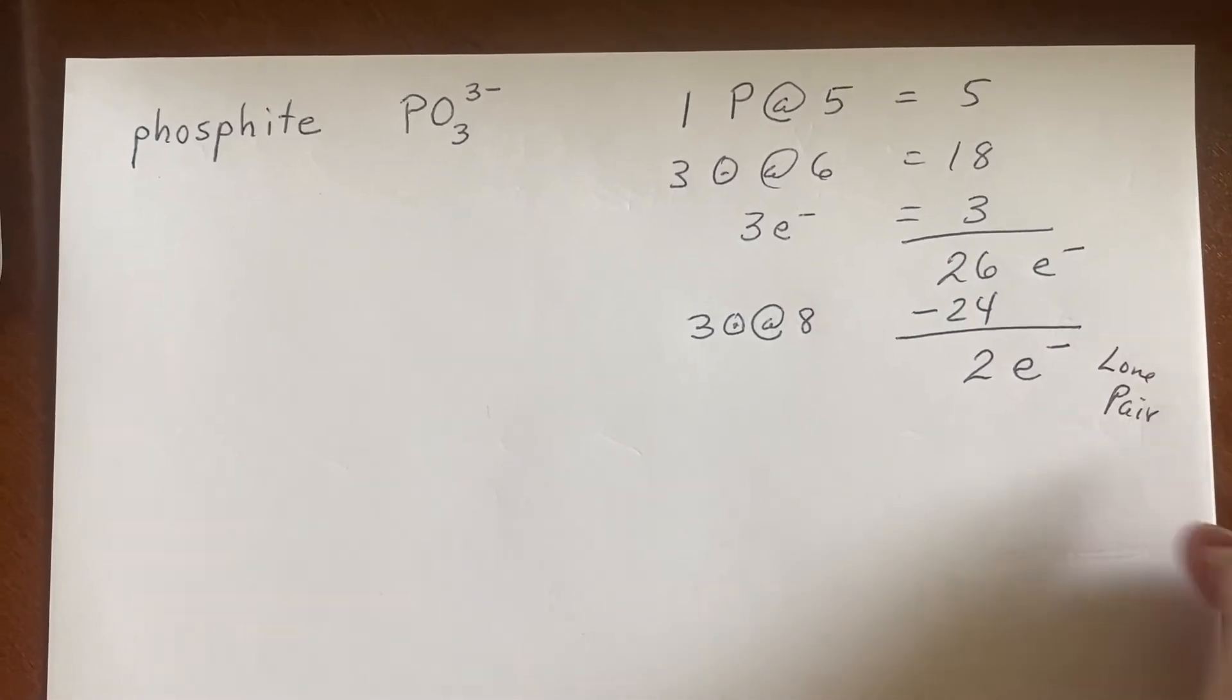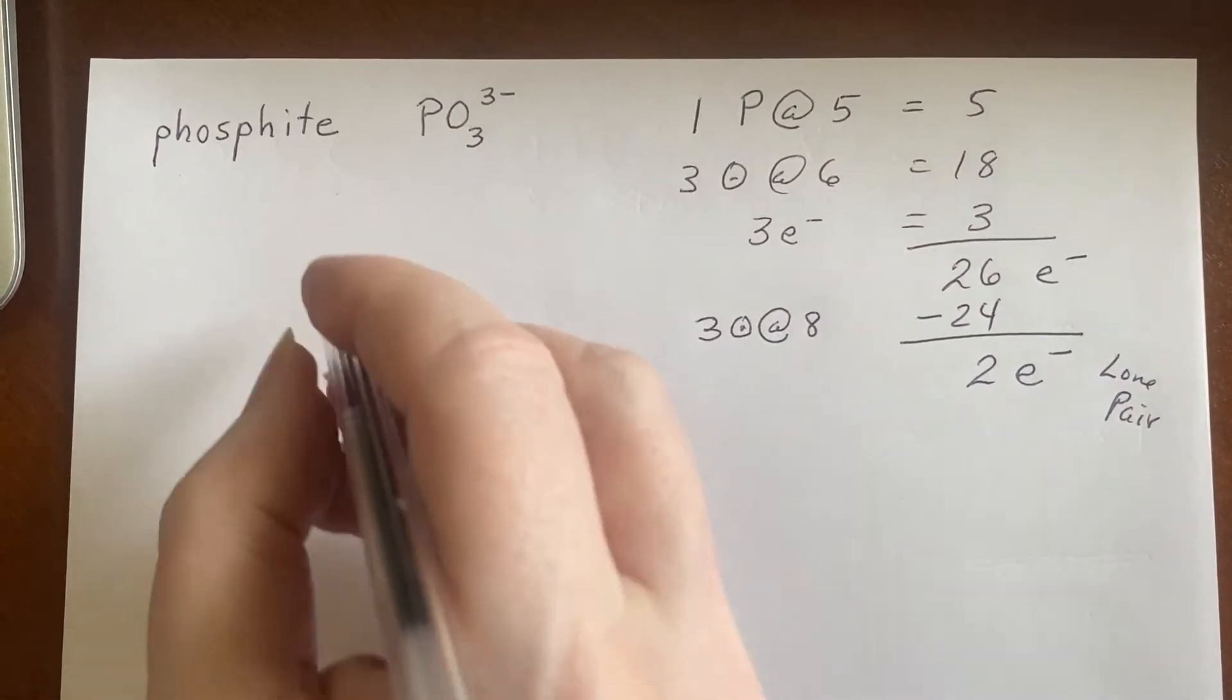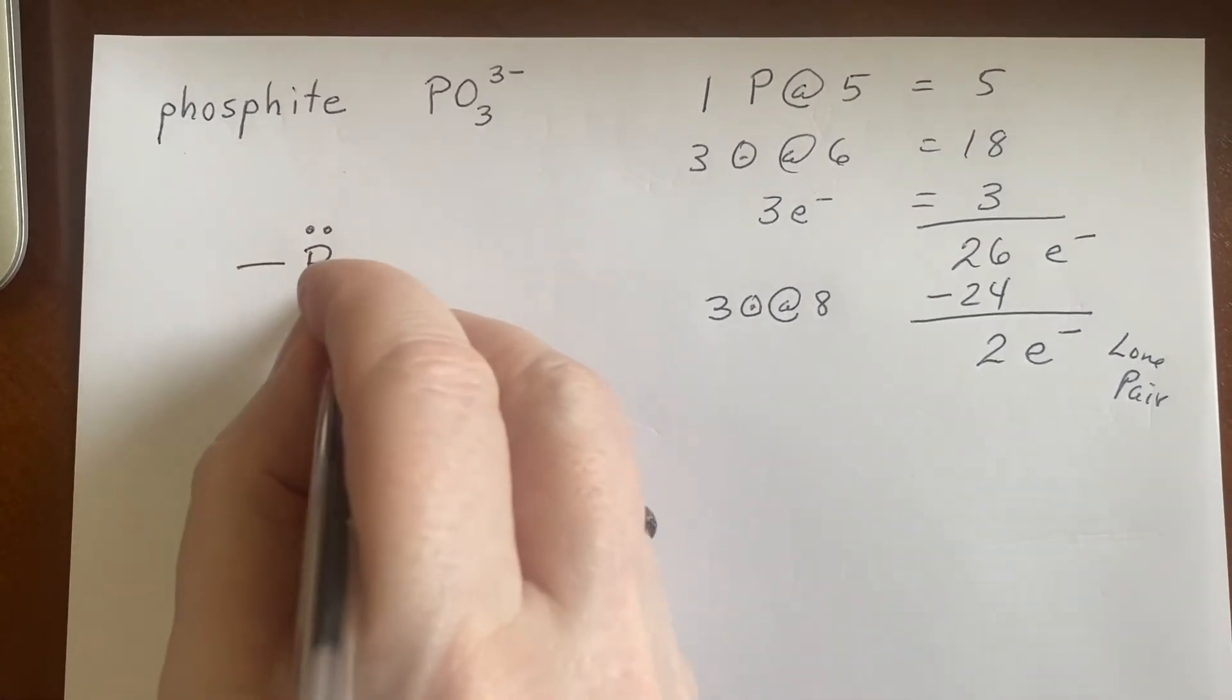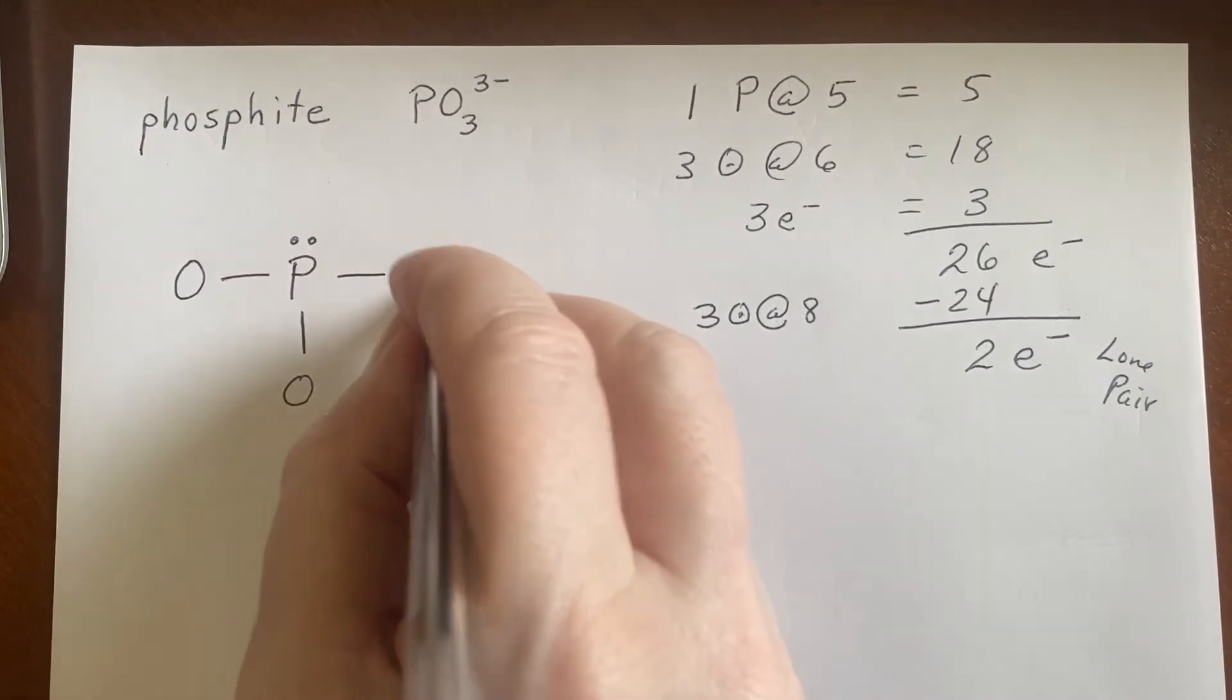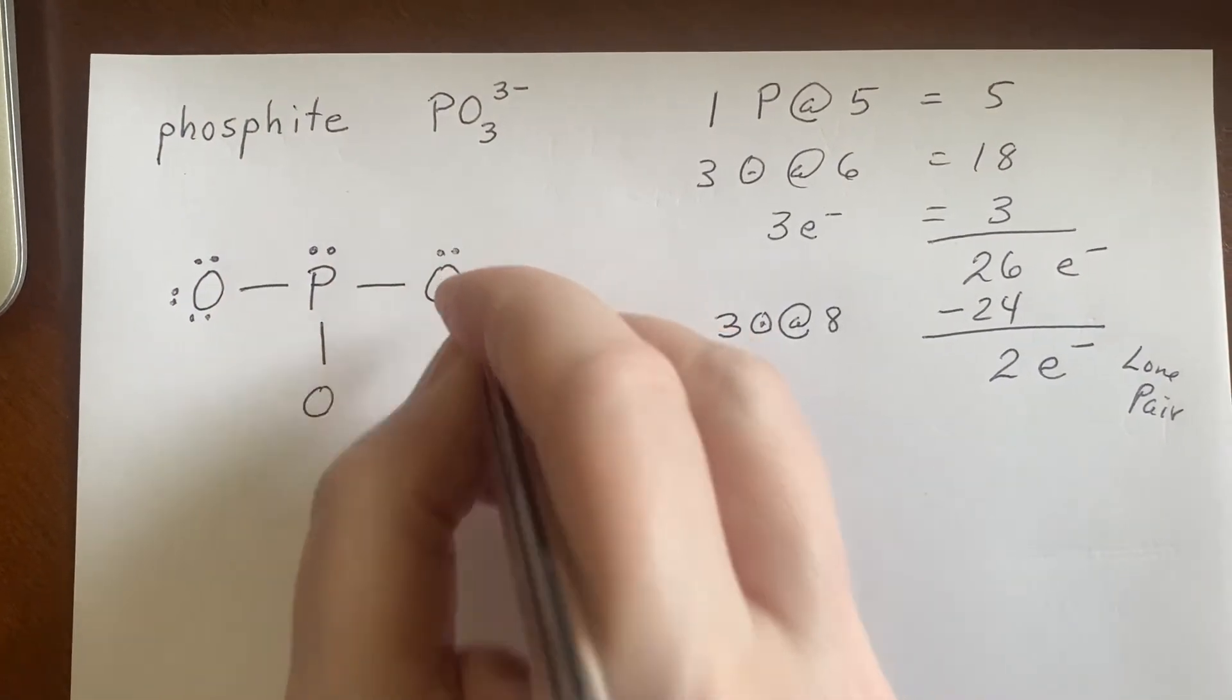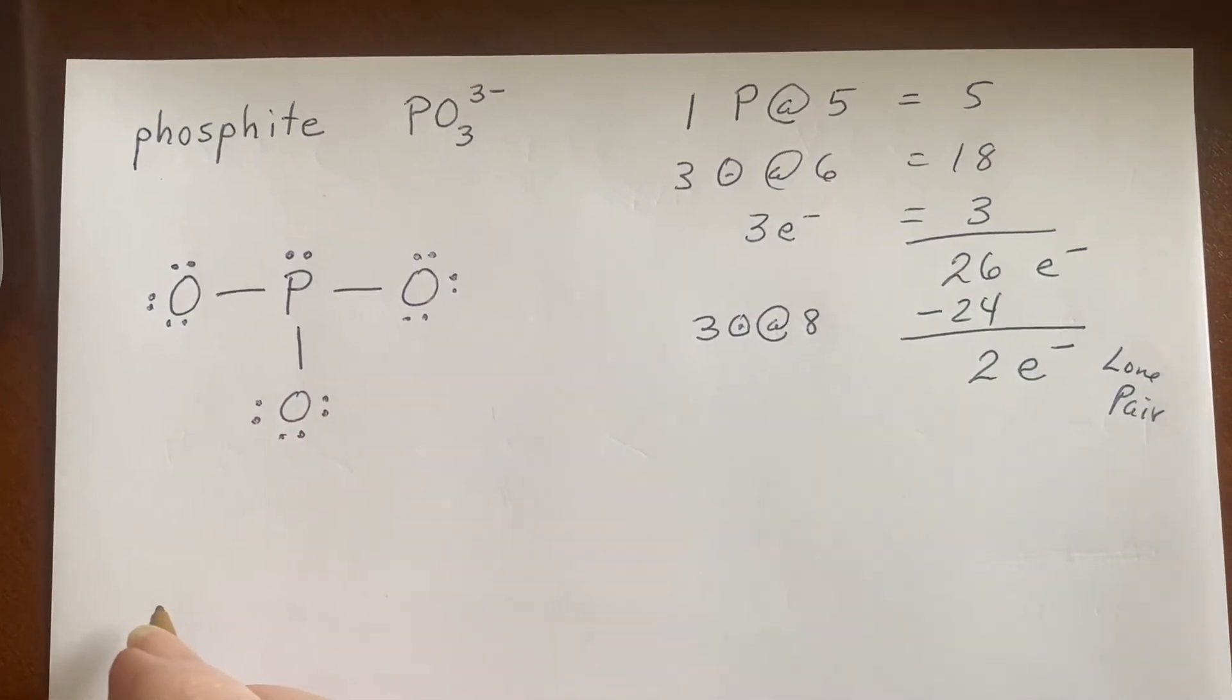And those are going to exist as a lone pair and they can't be on the oxygens. They've already gotten their share. So they're going to go on to the phosphorus. So let us start drawing. There's the lone pair on the phosphorus. Each of these oxygens has to be attached and each of the oxygen has a full octet on it. So here we have our first idea of what the Lewis structure should look like.